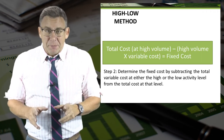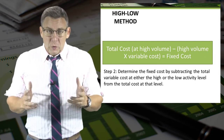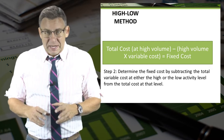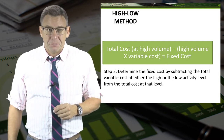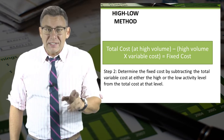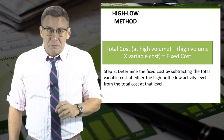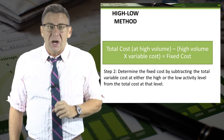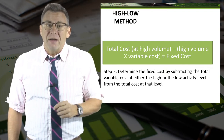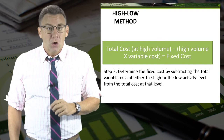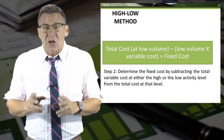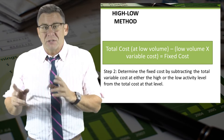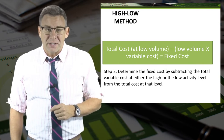Using our data table and the variable cost per unit, we can figure out fixed costs. This can be done two ways and both give us the same information. We can take the cost at the high volume and subtract the high volume times the variable cost per unit to arrive at fixed costs. Or we can take the cost at low volume and subtract the low volume times the variable cost per unit to arrive at fixed costs.